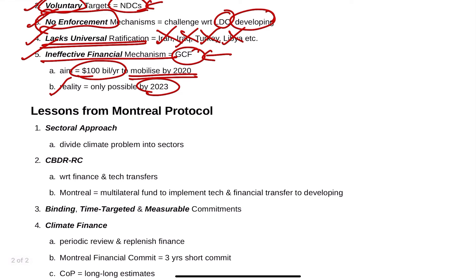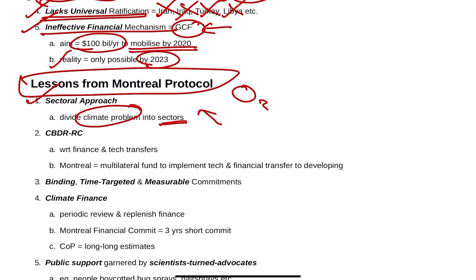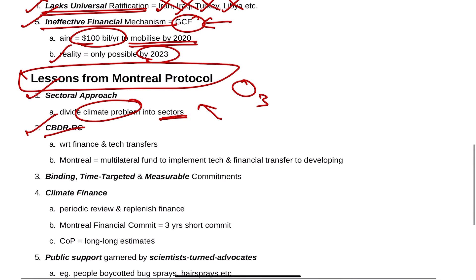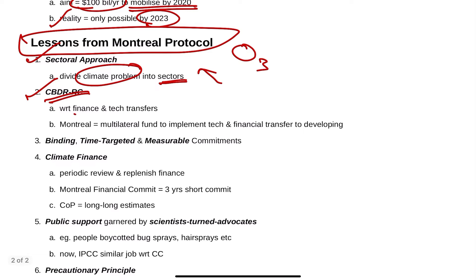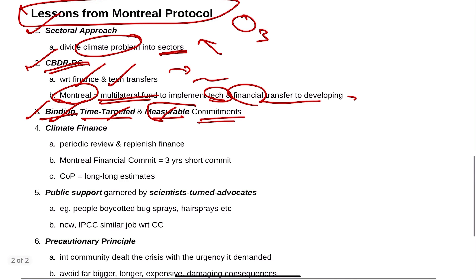Lessons to be learned from the Montreal Protocol: first, a sectoral approach — divide the climate problem into different sectors and approach each sector; Montreal targeted only ozone. CBDR-RC must definitely be there — finance and technology must be transferred to developing countries so they can implement climate change measures; Montreal had a Multilateral Fund for this. There must also be binding time-bound and measurable commitments.